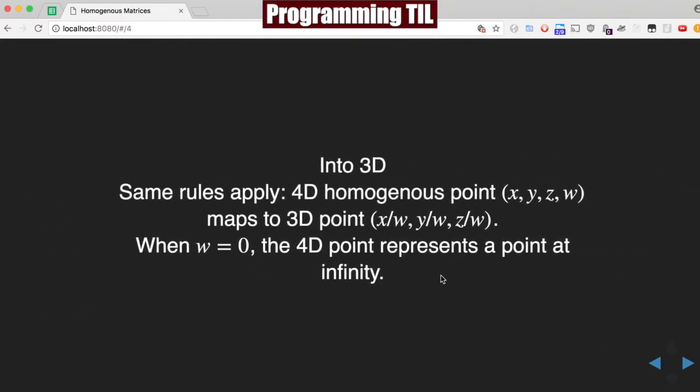So if we're going to go into 3D, we're going to have the same rules. We have XYZW, and it's going to map onto a 3D point X over W, Y over W, Z over W. And when W is equal to 0, the 4D point represents a point at infinity.